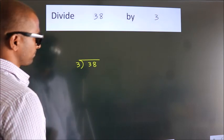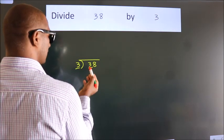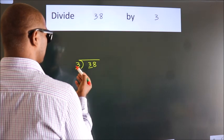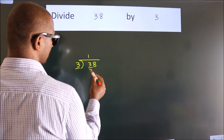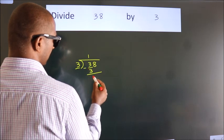Next. Here we have 3. Here 3. When do we get 3? In 3 table. 3 once, 3. Now we should subtract. We get 0.